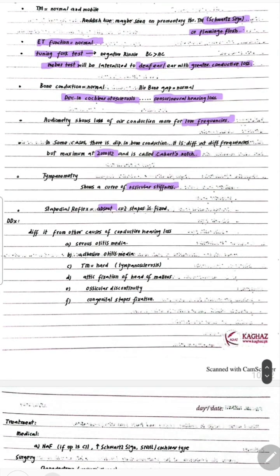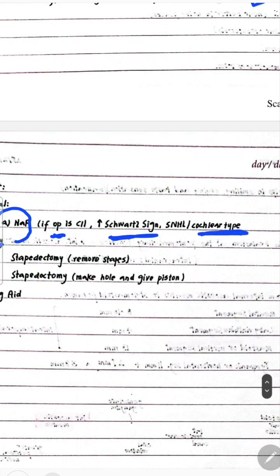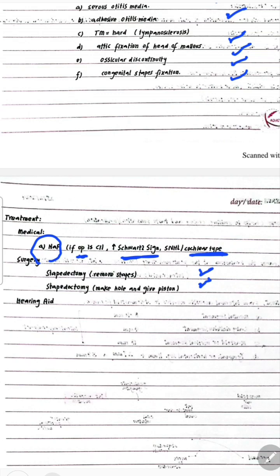Differentials include other causes of conductive hearing loss such as serous otitis media, adhesive otitis media, tympanosclerosis, attic fixation of the head of malleus, ossicular discontinuity, and congenital stapes fixation. For treatment, sodium fluoride is used especially for the cochlear type. Stapedectomy or stapedotomy can be performed — in stapedotomy a hole is made and a piston is placed. Hearing aids can also be used.